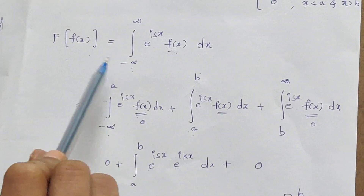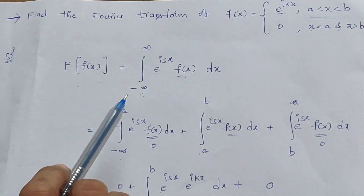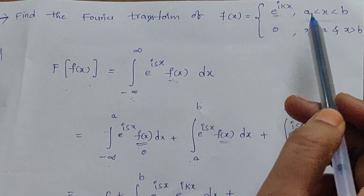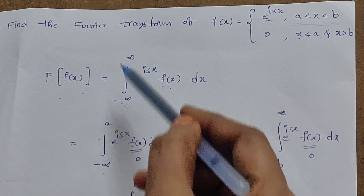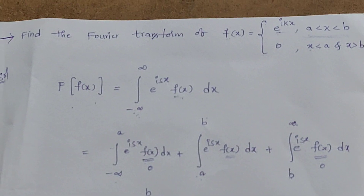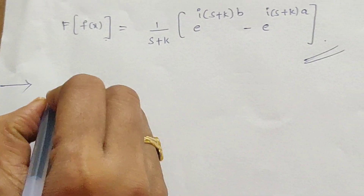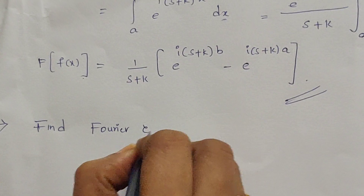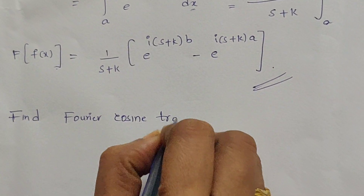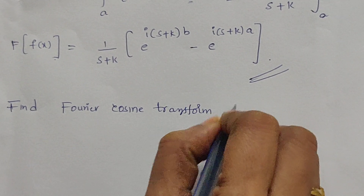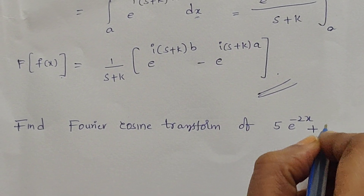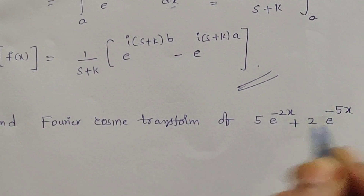From the Fourier transform definition we have limits from minus infinity to infinity. Mostly in problems they won't give only one function — they specify limits. Accordingly we have to split the interval from minus infinity to infinity. The next problem is: find the Fourier cosine transform of 5e^(-2x) + 2e^(-5x).